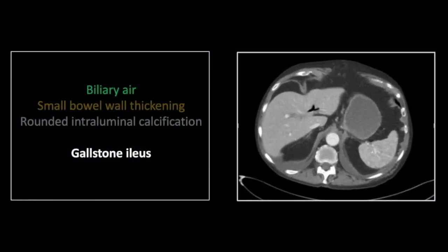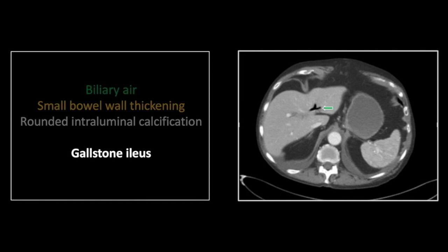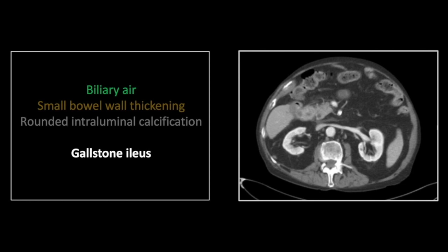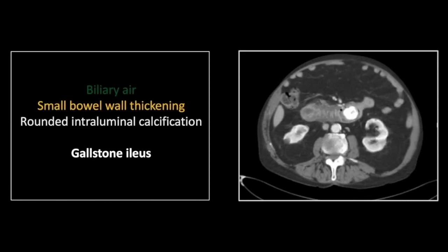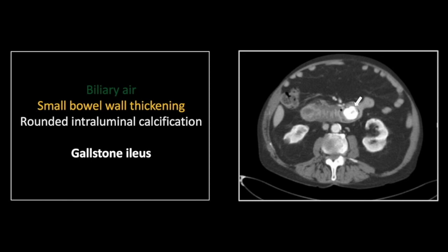Our next case is a gallstone ileus. This of course manifests as biliary air. Note the central arborizing gas here in the periportal region. Lower down you can see a thick-walled gallbladder fundus with a little bit of contrast or calcification within it and a small focus of gas. There is actually a communication between that gallbladder fundus and the adjacent duodenum. Lastly, you can see a thick-walled dilated duodenum and a large faceted gallstone in the second most common region for a gallstone ileus to cause obstruction — that being at the ligament of Treitz. The first most common region of course being the ileocecal region.